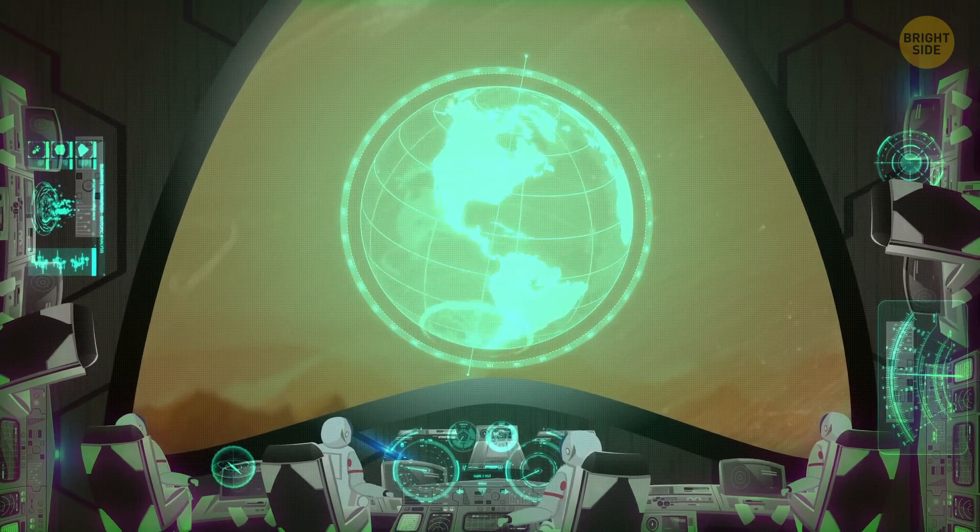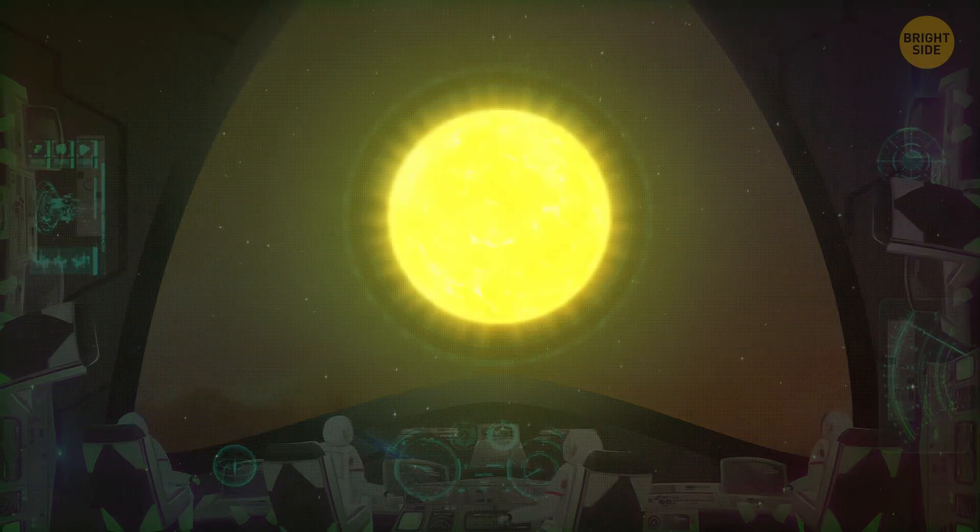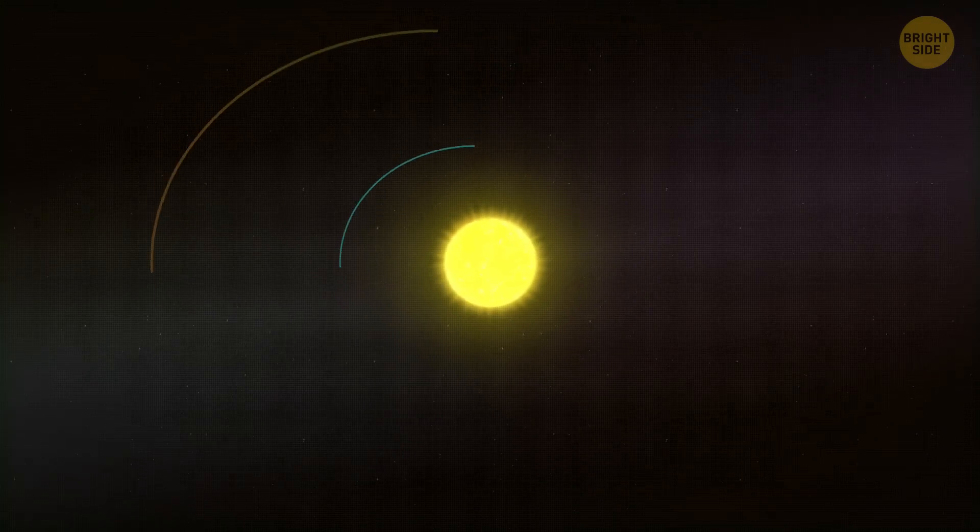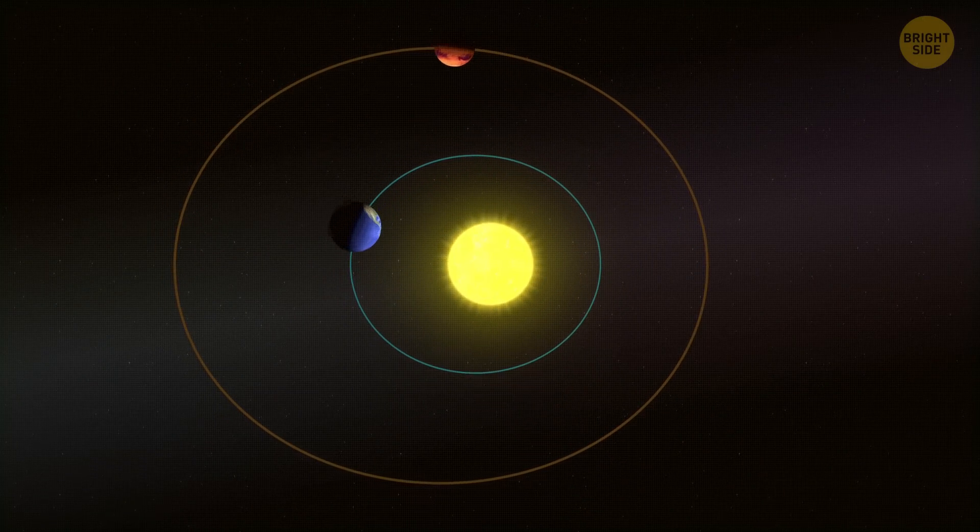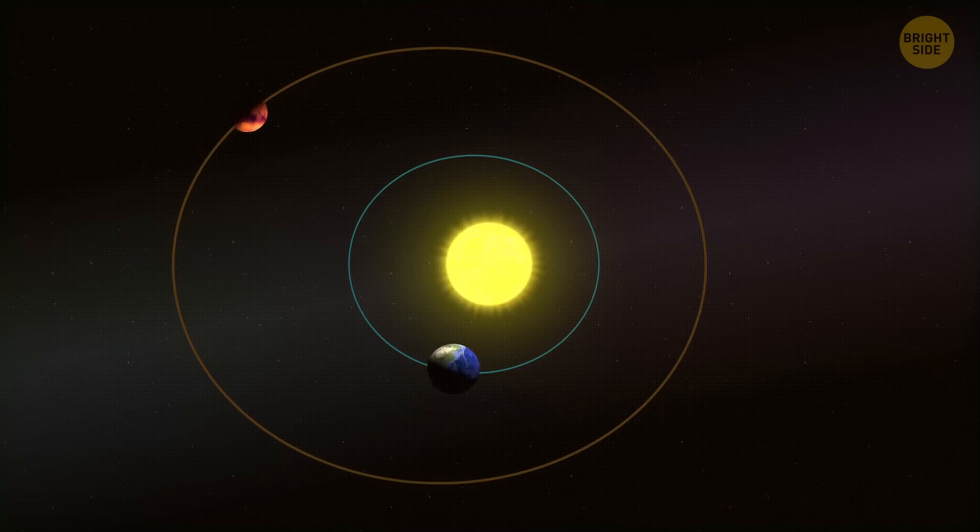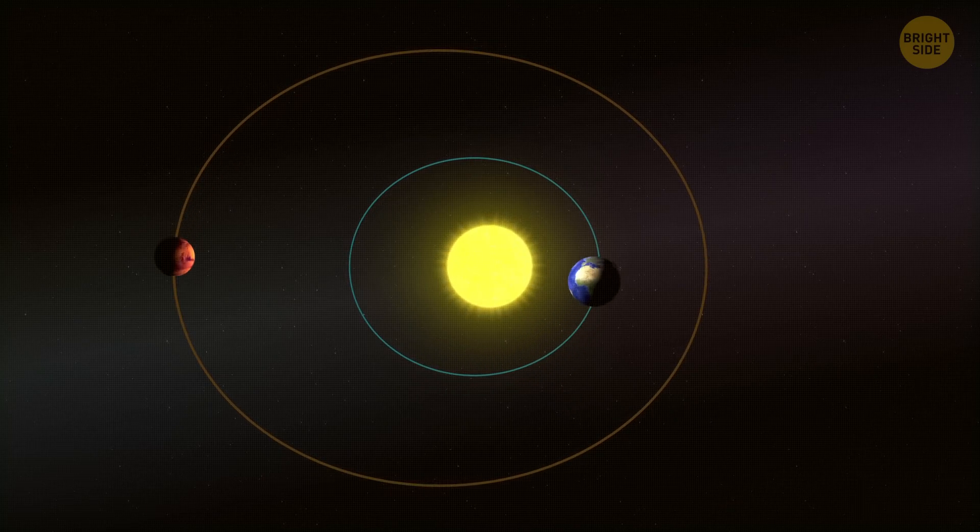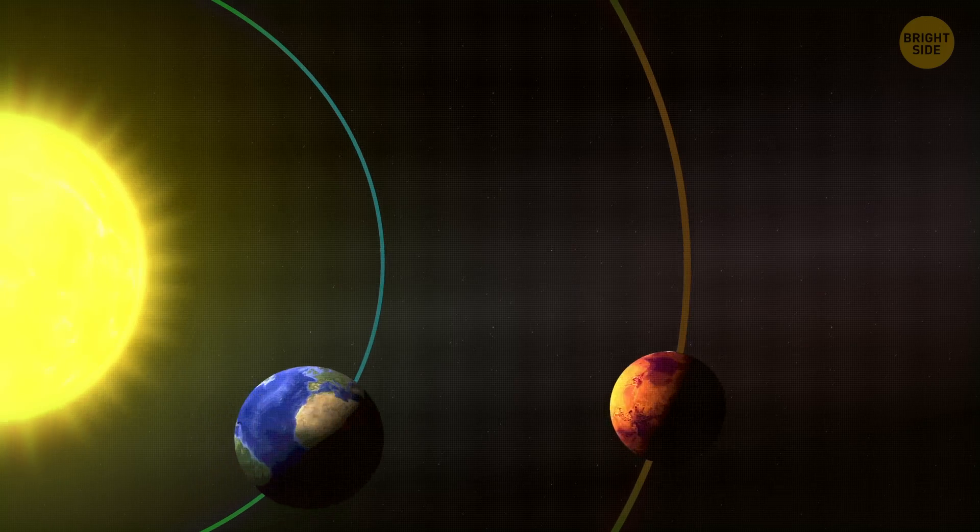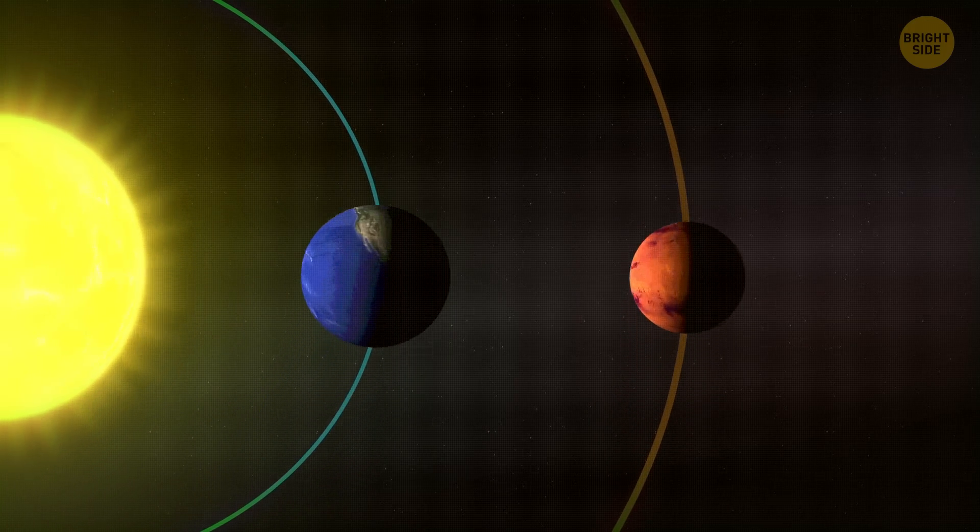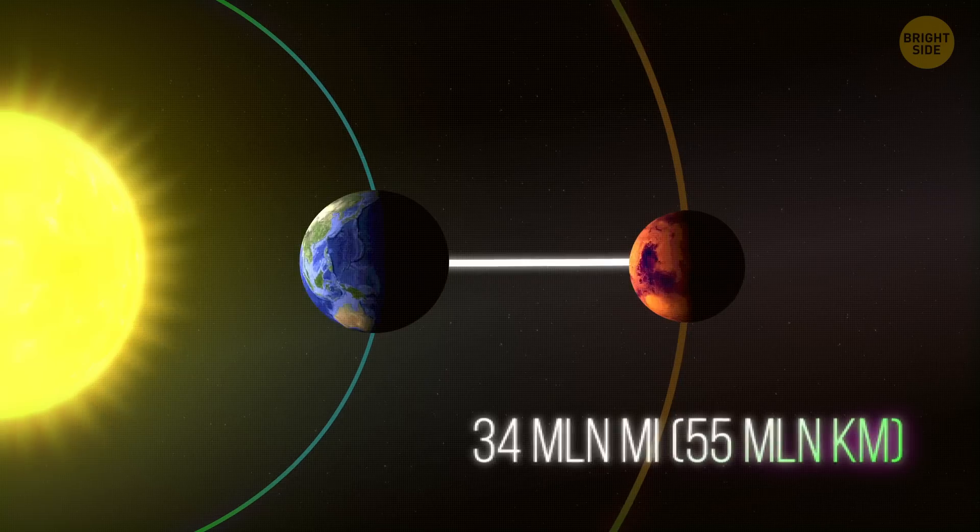Another problem is time. The orbits of Earth and Mars aren't perfectly circular. They're of different lengths and make circles around the Sun at different speeds. When Earth and Mars are at their farthest apart, the distance between them is about 248 million miles. And the closest distance, when the Earth is perfectly between the Sun and Mars, is 34 million miles.